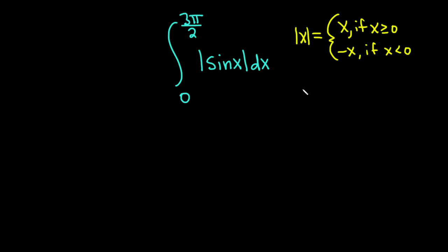So in this particular case we have the absolute value of sine x. This will be equal to sine x in the case where x is greater than or equal to 0 and the absolute value of sine x will be equal to minus sine x when x is less than 0.